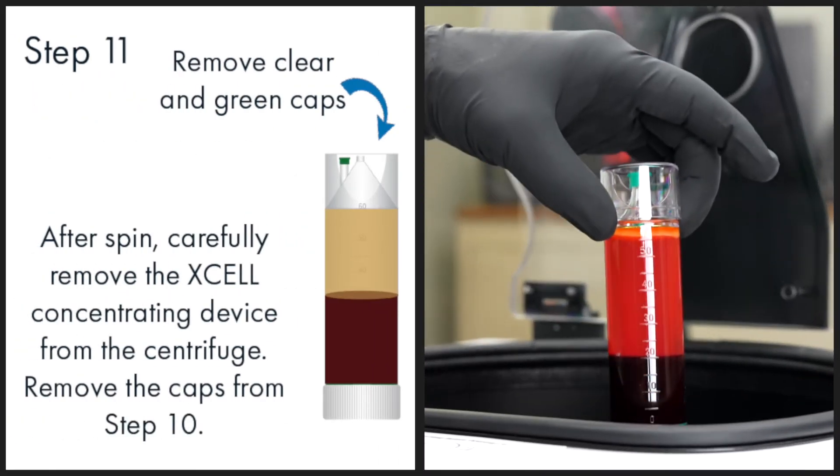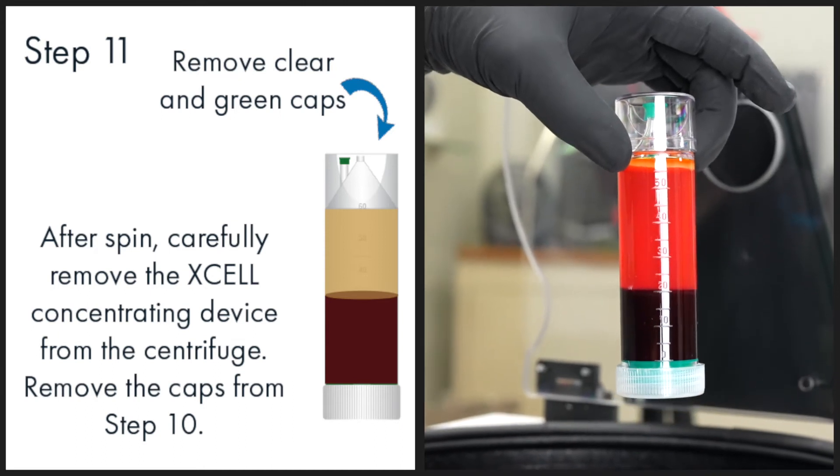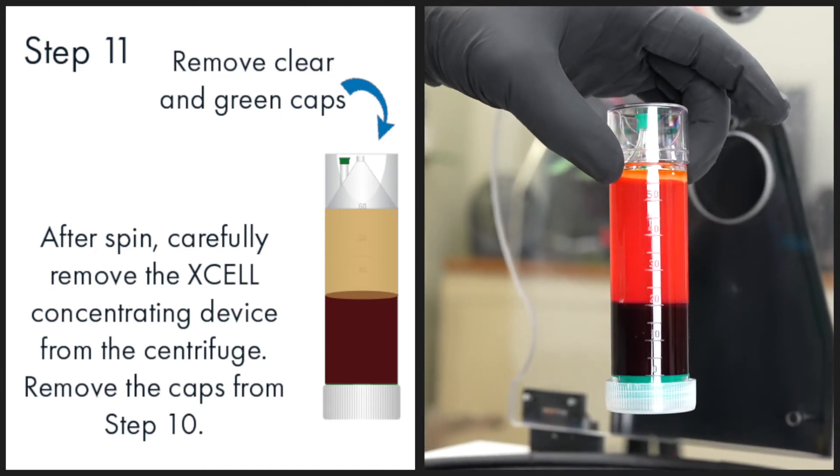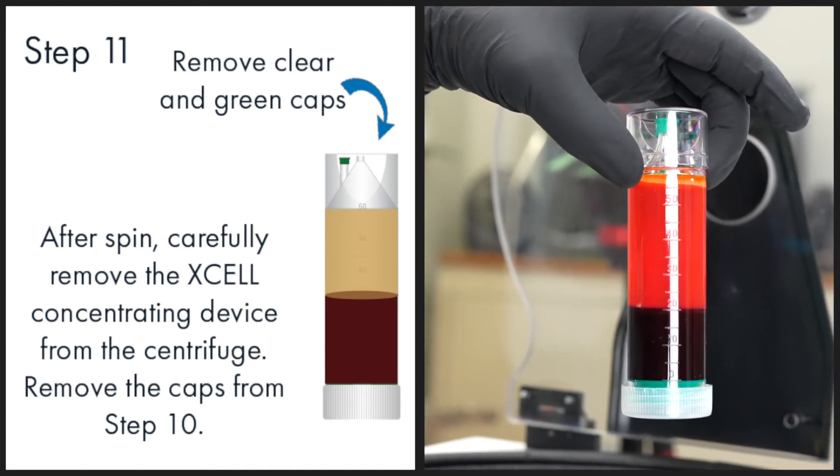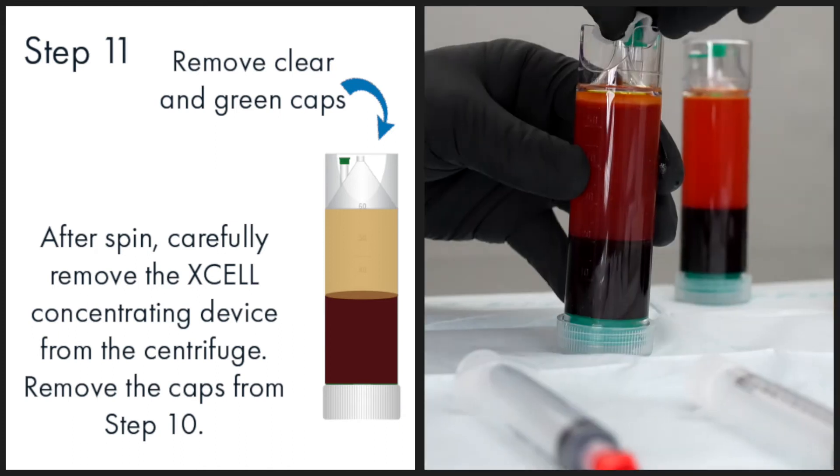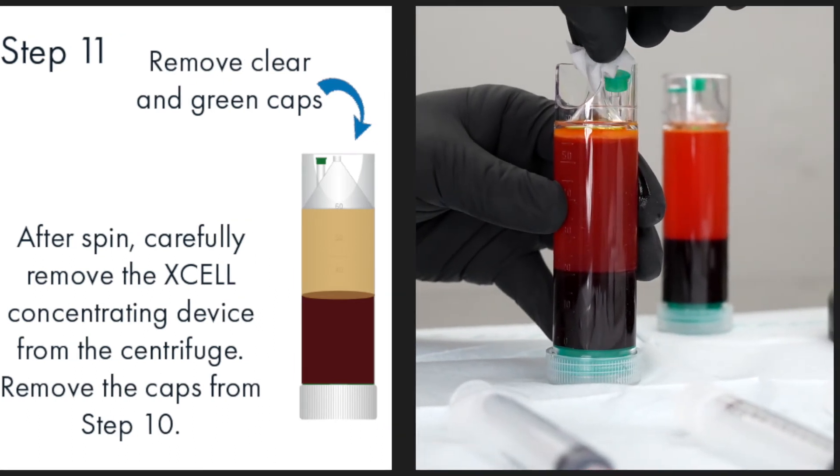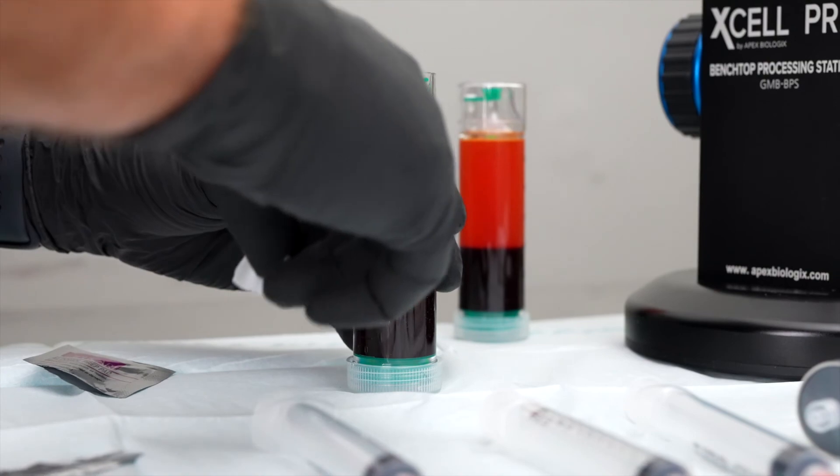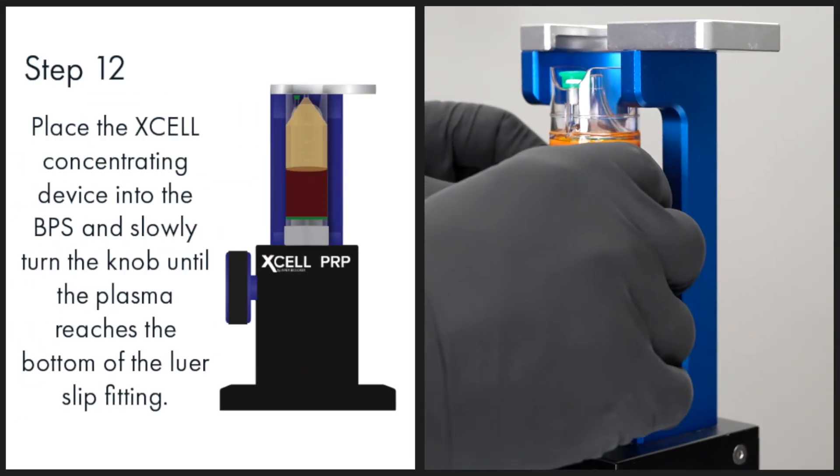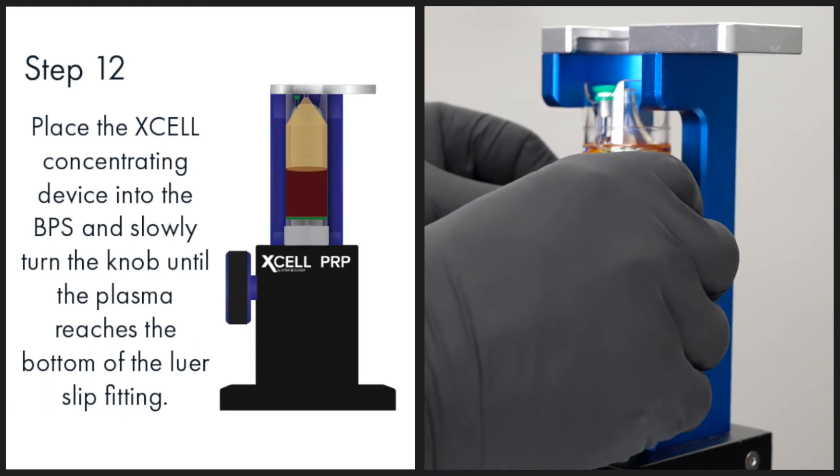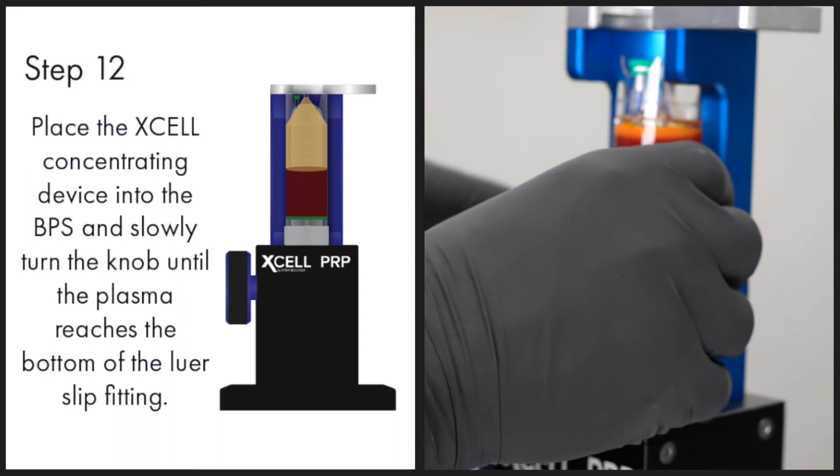After the spin is complete, carefully remove the XL concentrating device from the centrifuge. Remove the clear cap and green stoppers from the casing. Place the XL concentrating device into the benchtop press and slowly turn the knob until plasma reaches the bottom of the Luer slip fitting.